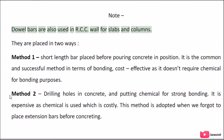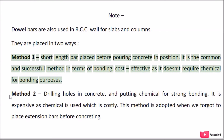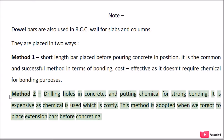Dowel bars are also used in R.C.C. walls for slabs and columns. They are placed in two ways. Method 1: A short length bar is placed before pouring concrete in position. This is the common and successful method in terms of bonding and is cost-effective as it doesn't require chemicals for bonding. Method 2: Drilling holes in concrete and using chemicals for strong bonding. This method is expensive and is adopted when extension bars were forgotten before concreting.